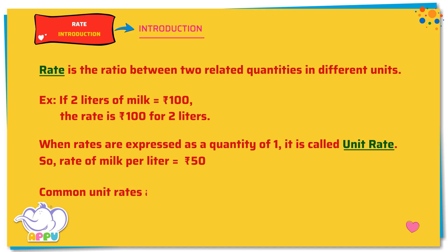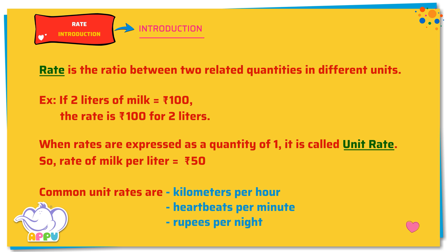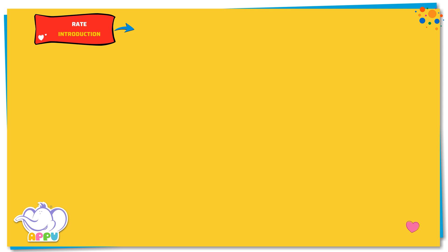Common unit rates are kilometers per hour, heartbeats per minute, and rupees per night. Tiger ran a distance of 60 kilometers in 3 hours. How much distance did Tiger cover in 1 hour?